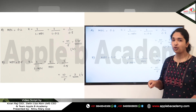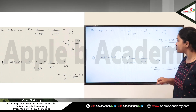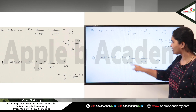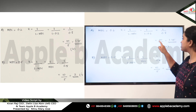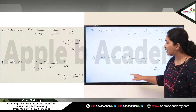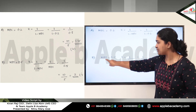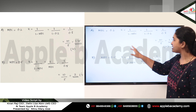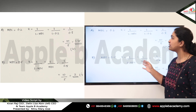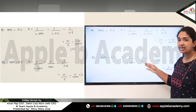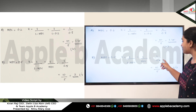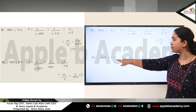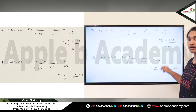So when MPC is equal to 0.2, the multiplier is 1.25, meaning Option A from List 1 matches with Option 4 in List 2. For Option B, MPS is equal to 0.5. Using the formula K = 1 divided by MPS, we get 1 divided by 0.5 which gives us the value 2, so Option B matches with Option 1 from List 2.